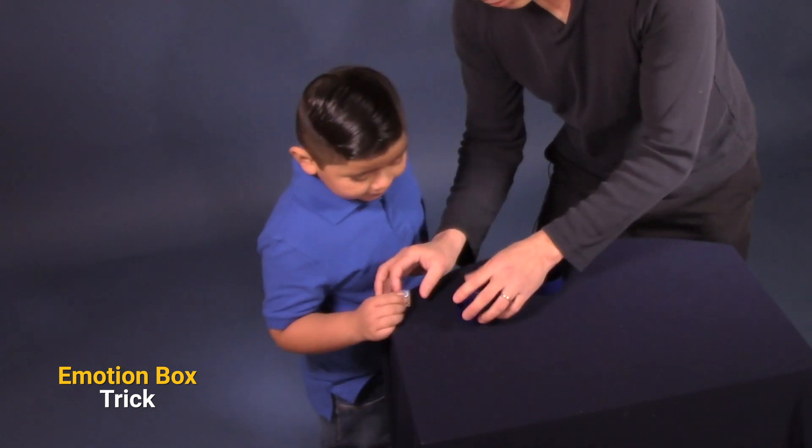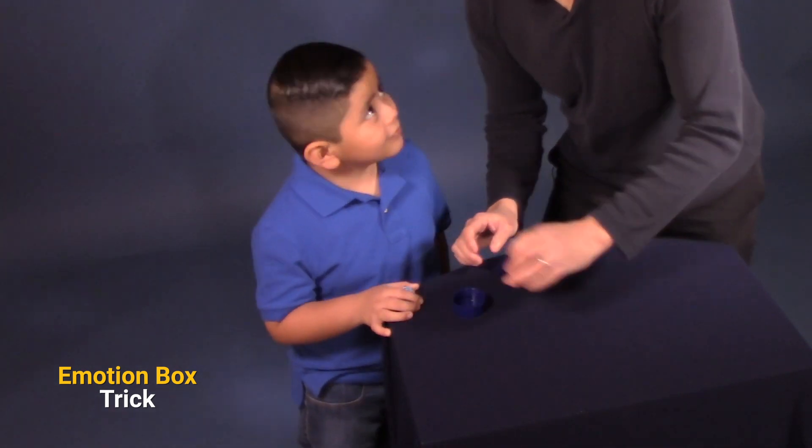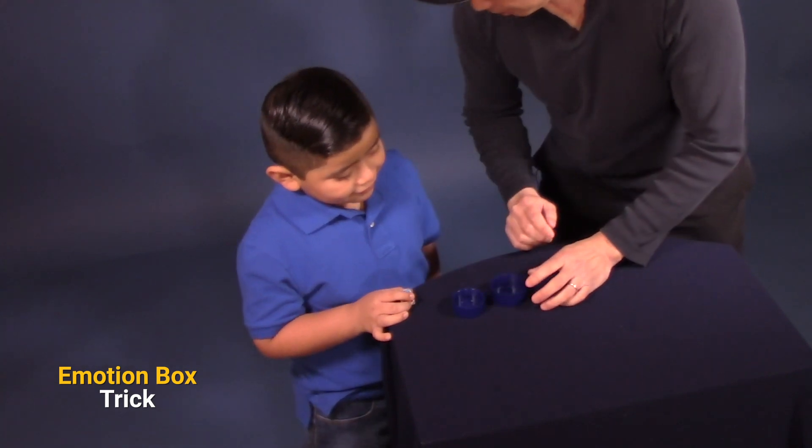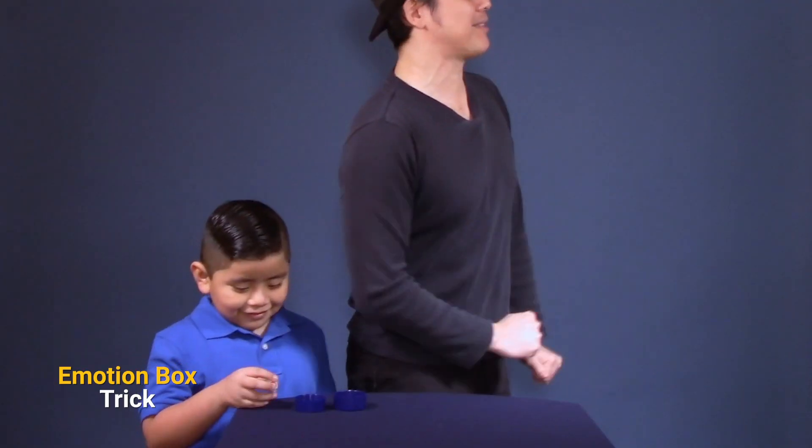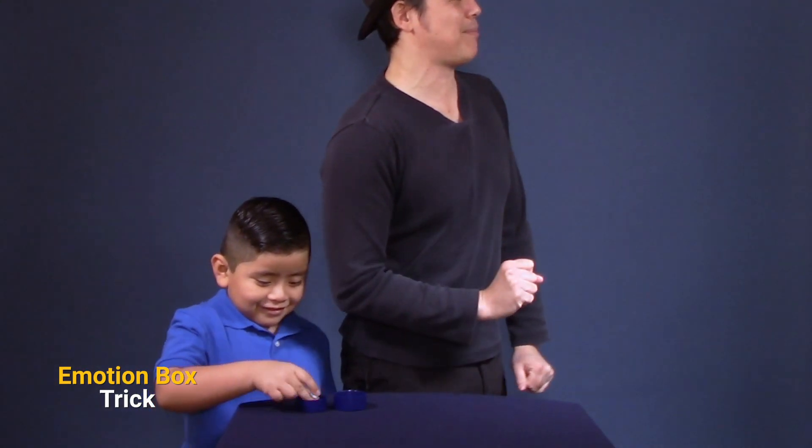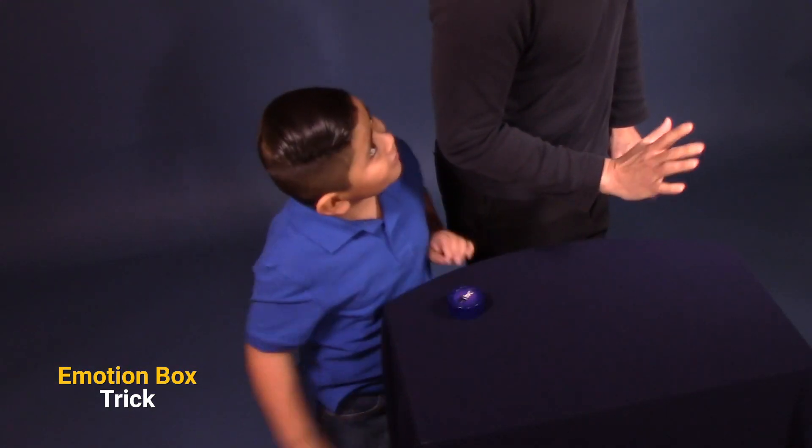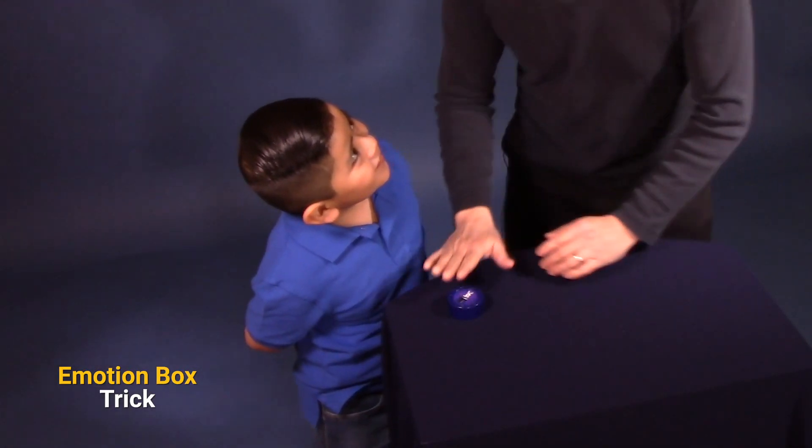I'd like you to pick one of the emotions, put it face up in the box, and then cover the box. Let me know when you're done, all right? Here we go. Go ahead and put the emotion in the box. Cover the box. Are you ready? Yeah. All right, here we go.